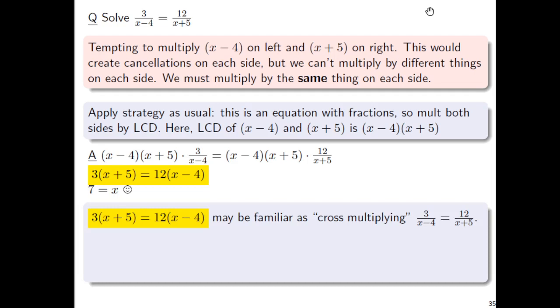I just would like to point out this step that's shown in yellow: 3 times x plus 5 equals 12 times x minus 4. That might be familiar to you as cross-multiplying in the original problem at the top. So, the point of this slide is to just connect that old trick to what's really going on. What's really happening under the hood is you're multiplying both sides by the LCD, and it's creating these cancellations.